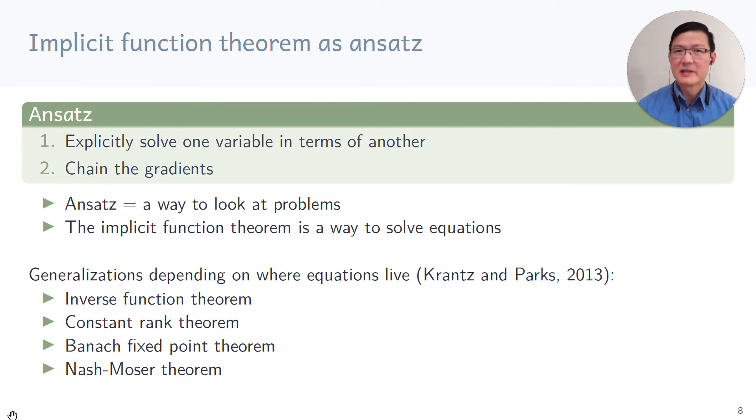And depending on the exact topology from where the three variables x, y and z were in the previous page, the implicit function theorem gives you slightly different conditions when you can do this. And if you're interested in such generalizations, I recommend this textbook which looks at all different types of implicit function theorems. Other names include inverse function theorem, which is more general, constant rank theorem, which is even more general again, the Banach fixed point theorem, which is even more general again, and of course the Nash-Moser theorem.